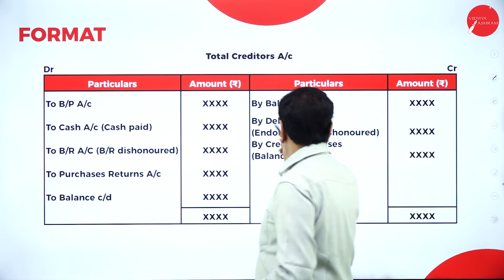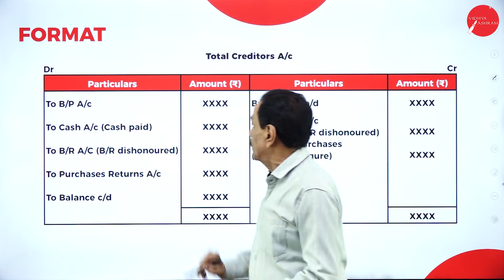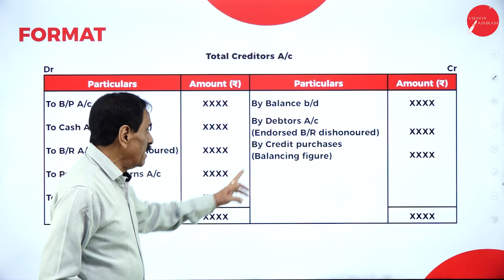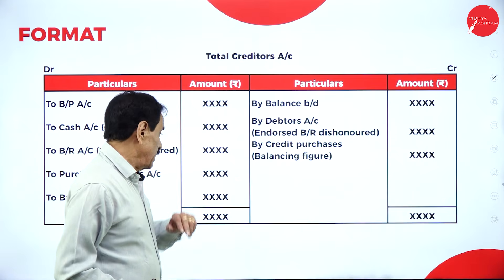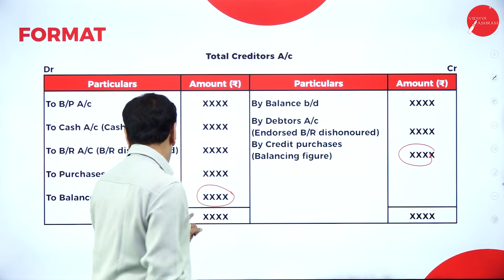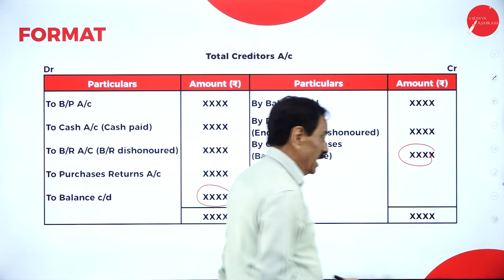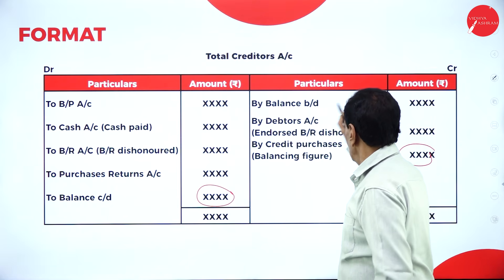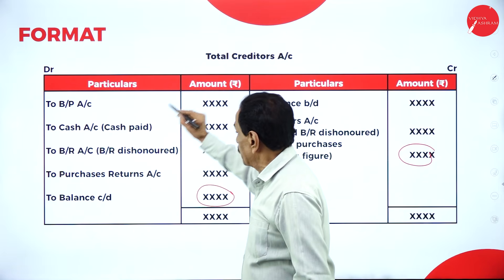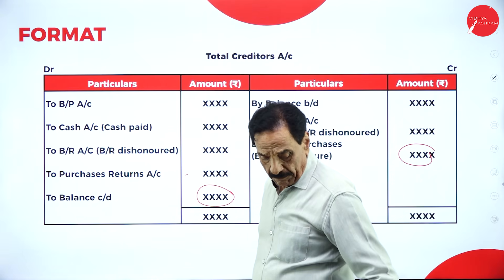For the total creditors account — opposite to the debtor account — the debit side includes: balance brought down (opening creditor), BP accepted or BP honoured, cash paid to creditor, BR dishonoured, purchase returns, and balance carried down (closing creditor). The credit side includes: debtor end-asset BR dishonoured and credit balancing figure. If you have the closing balance, the difference is credit purchase; if you have credit purchase, the difference is closing creditor.